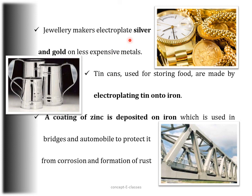Jewelry makers electroplate silver and gold on less expensive metals, giving ornaments the appearance of silver or gold at a much lower cost. Tin cans used for storing food are made by electroplating tin on iron, because tin is less reactive than iron, preventing food from coming into contact with iron and getting spoiled. A coating of zinc is deposited on iron used in bridges and automobiles to protect it from corrosion and the formation of rust.